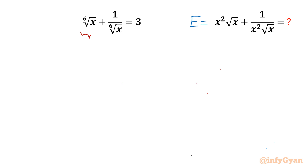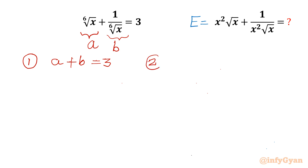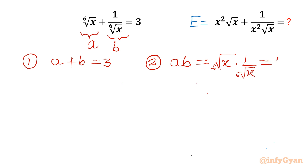I will call the 6th root of x as 'a', and 1/(6th root of x) as 'b'. So the first equation I can write is a + b = 3. And the second equation is the product of both: a·b = 6th root of x × 1/(6th root of x), so a·b = 1.